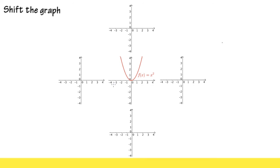Let's talk about how we can shift the graph of a function to the up direction, to the right direction, and the down direction, and of course the left direction. We are going to see and pay attention to how to write an equation that will associate this shiftment in these four directions.